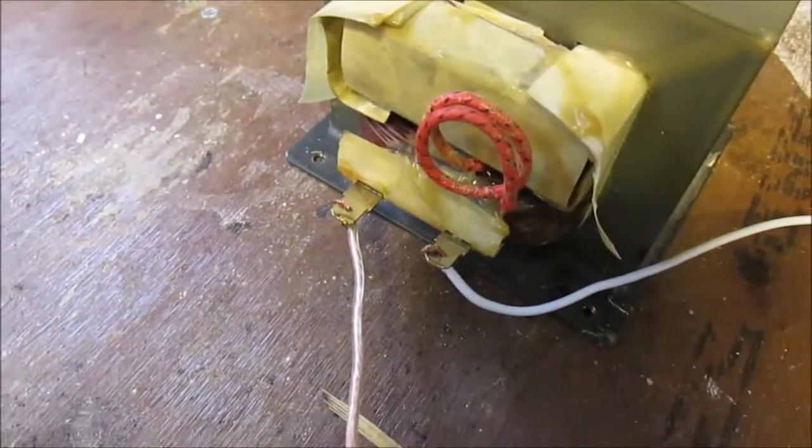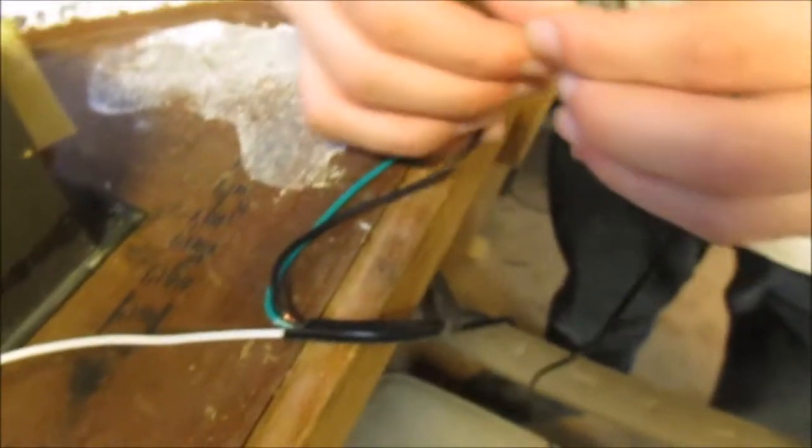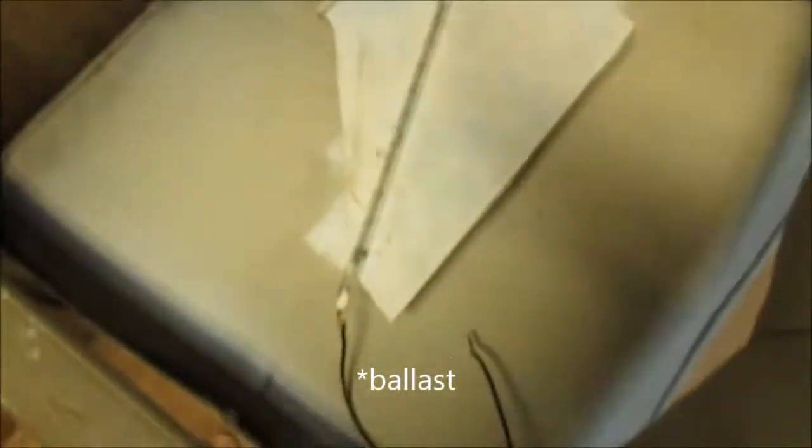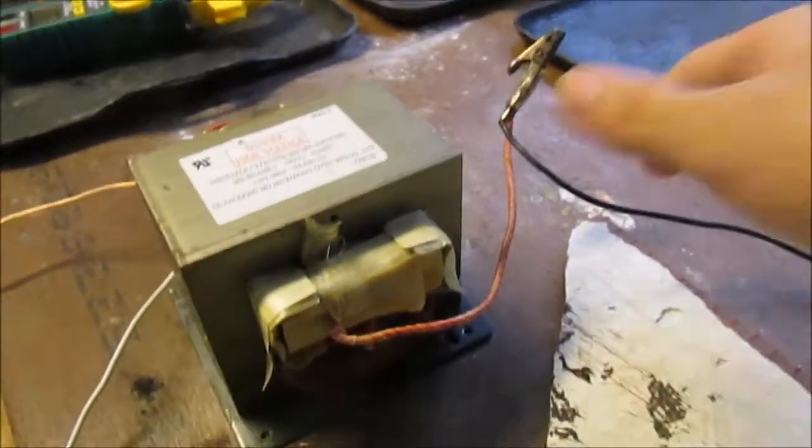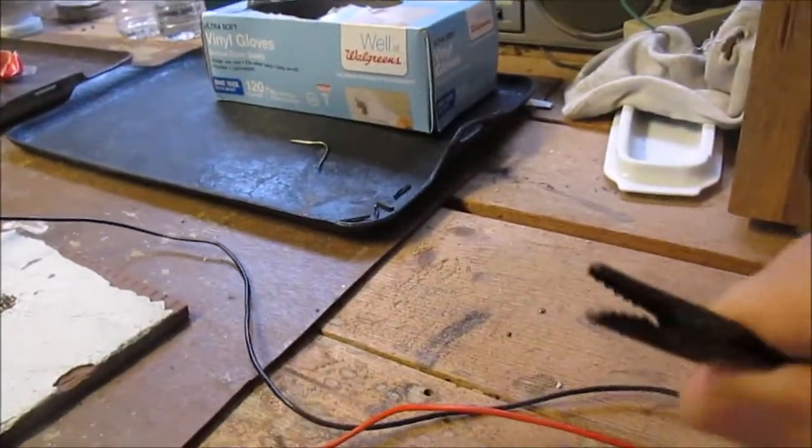Here you can see the inputs to the primary coil of the transformer. We have them hooked up to wires that we are going to connect to our resistor. On the output, we have this wire, which is attached to a cable with an alligator clip.